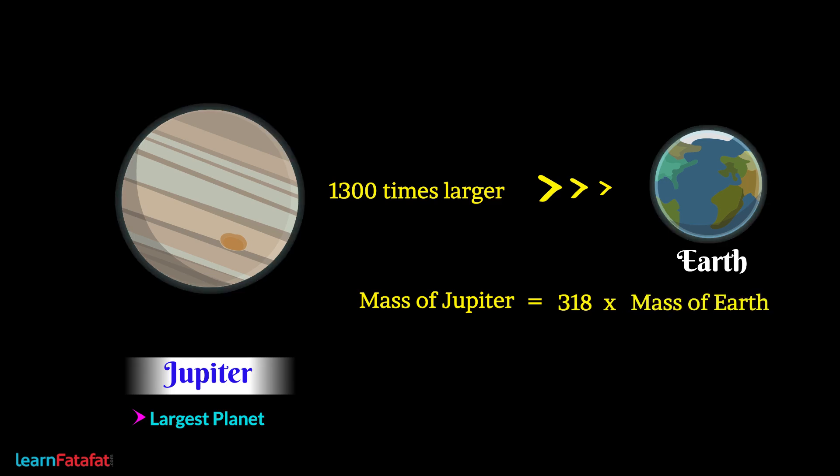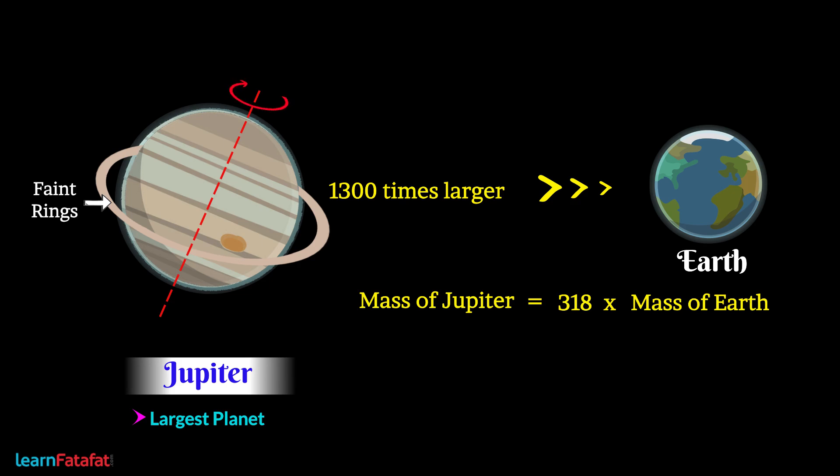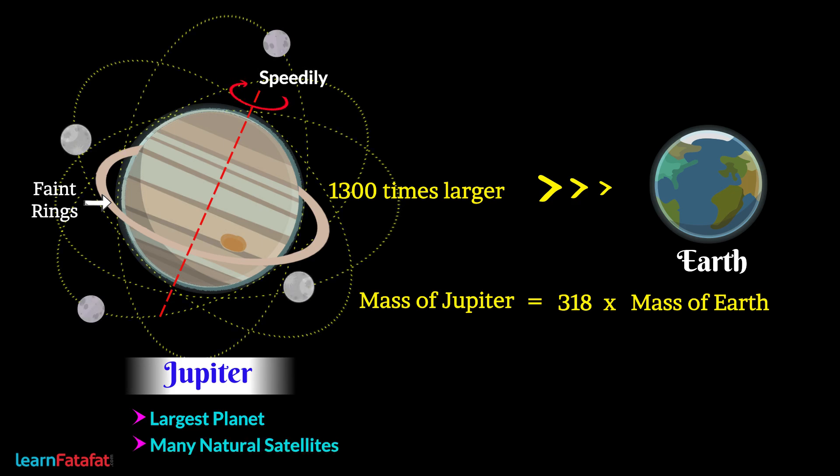You can easily identify Jupiter as it is very bright and has faint rings around itself. Jupiter rotates around itself speedily. There are many natural satellites revolving around Jupiter. Four of them can be seen by telescope.